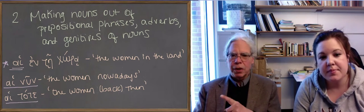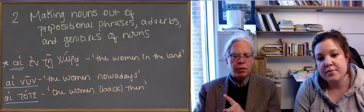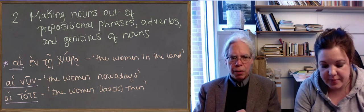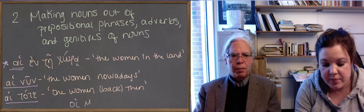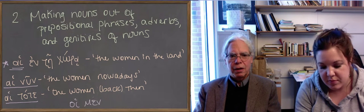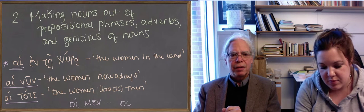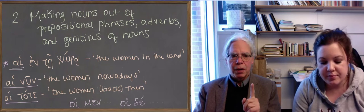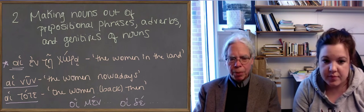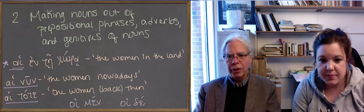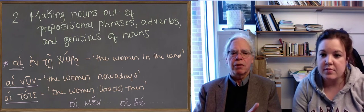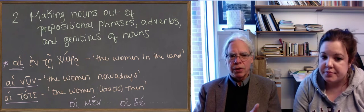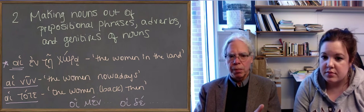Here's another thing that we can do. You can do this with particles. So you can say, we should write this down. So you can say, hoi men, dot dot dot, and hoi de. And that will mean some people and other people. Greek uses the masculine gender when it's not clear what gender something is. So it's non-gender specific as well as it can be masculine.